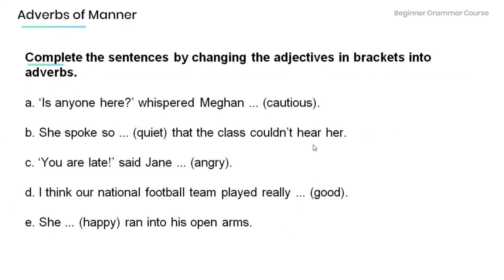Now read the following sentences and complete them by changing the adjectives in brackets into adverbs. A) 'Is anyone here?' whispered Megan. [cautious] B) 'She spoke so ___ that the class couldn't hear her.' [quiet] C) 'You are late,' said Jane. [angry] D) 'I think our national football team played really ___.' [good] E) 'She ___ ran into her open arms.' [happy]